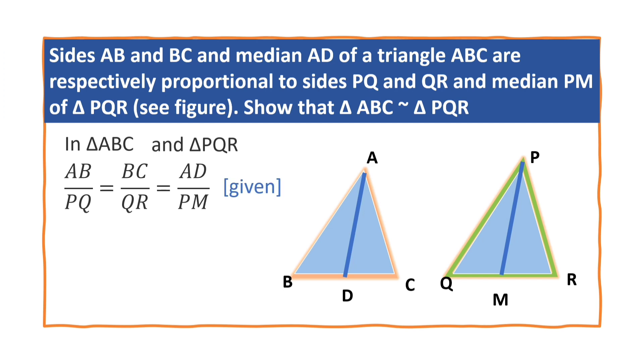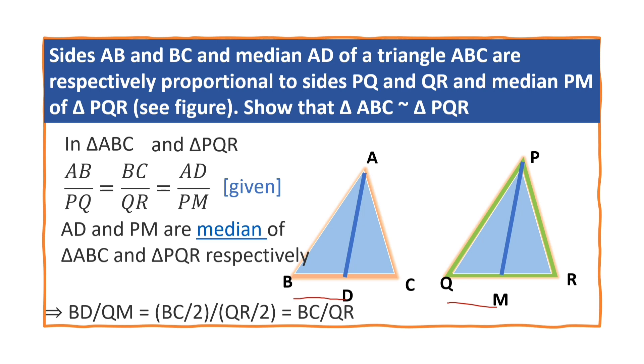We are given it. Since AD and PM are medians of triangle ABC and triangle PQR respectively, we can write BD by QM as BC by 2 instead of BD, and QR by 2 instead of QM. So here 2 and 2 get canceled. That is equal to BC by QR.